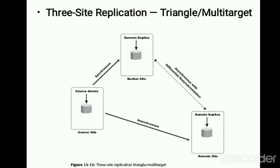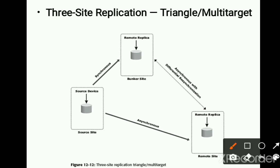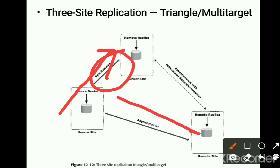Moving on, the next three-site replication configuration is called the triangle or multi-target. Here, we have three nodes — the source, the bunker, and the remote site — arranged in the form of a triangle. Replication from the source to the bunker is done using synchronous mode, and from the source to the remote site it is done using asynchronous mode.